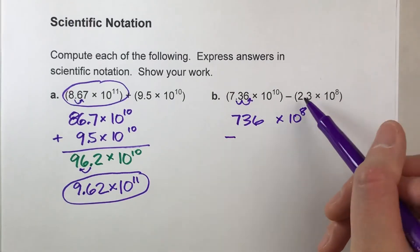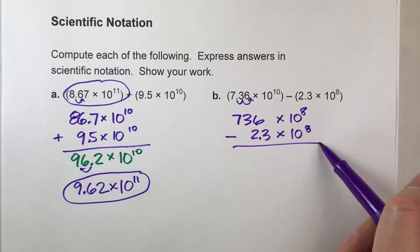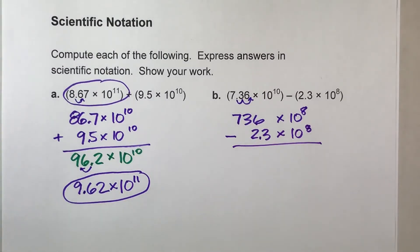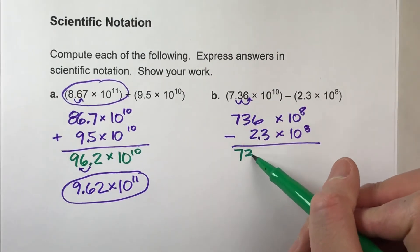Minus, I'm going to subtract this, and now that they have the same power of 10, I can actually subtract them. So I have 736 minus 2.3, and that gets us 733.7.